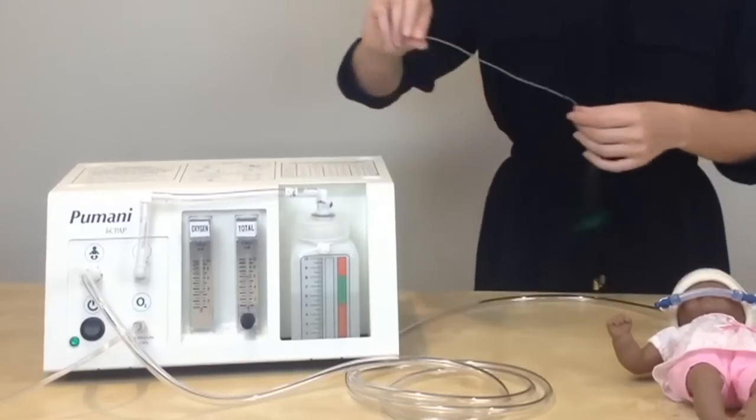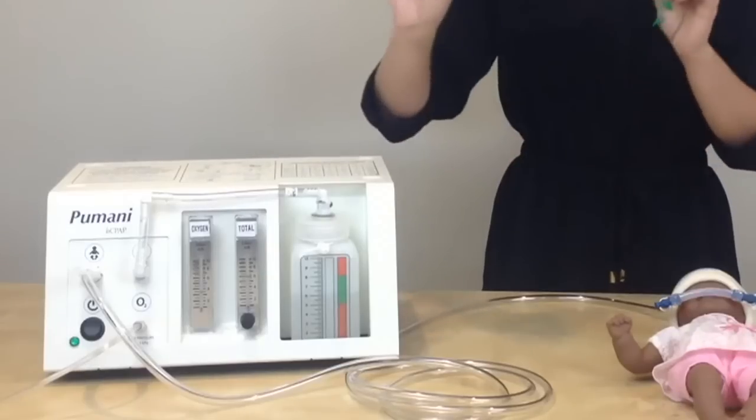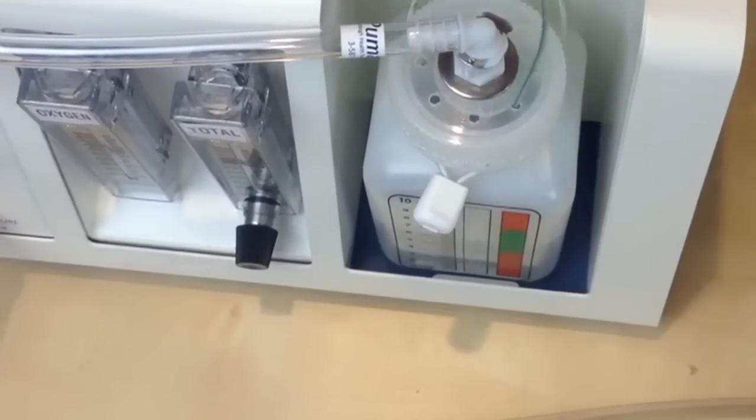And the way to add water to the bottle while the patient is on the Pumani is to take a feeding tube or a gastric tube and insert it into one of the holes on the top of the bottle lid.